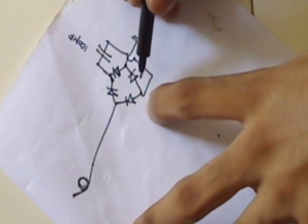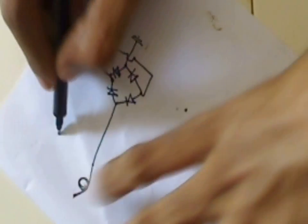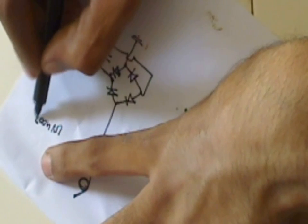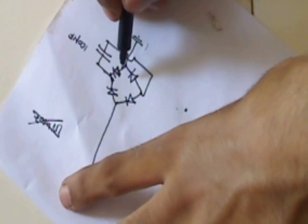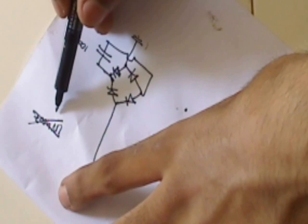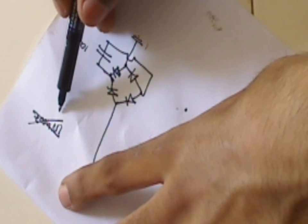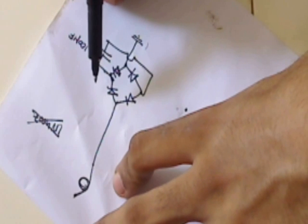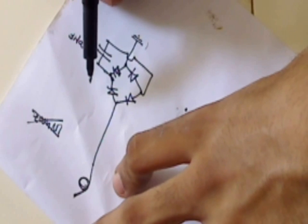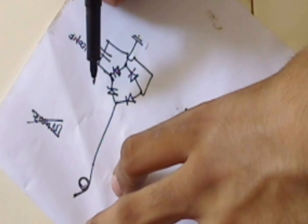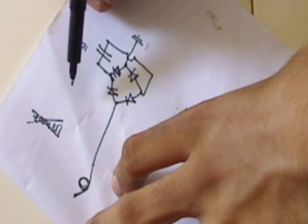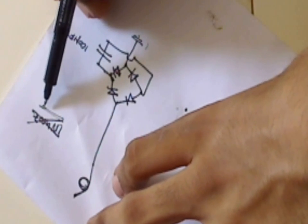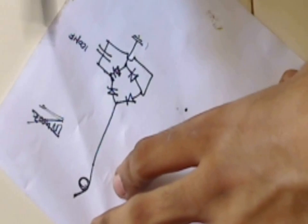Coming to the rectifier, we cannot use 1N4007 diodes for this rectifier because they will have a lot of voltage drop and the frequency response is very less. As we are trying to harvest RF energy or electromagnetic waves, to rectify the RF waves we need a high speed switching diode. While 1N4007 is a power diode with very low switching speeds.